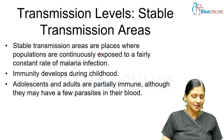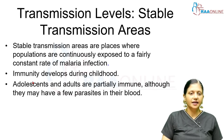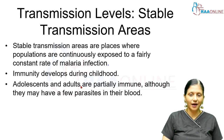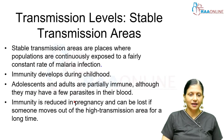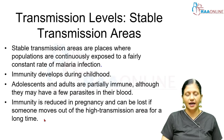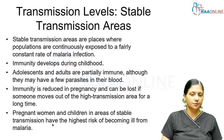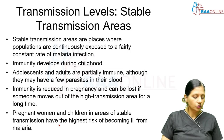There are stable and unstable malaria transmission areas. In stable transmission areas like Africa, the population is continuously exposed to a fairly constant rate of malaria, and during childhood a person develops immunity. In these stable transmission areas, adolescents and adults are partially immune and may have a few parasites in their blood. However, when these adults become pregnant, their immunity is reduced, and if they leave the area, immunity can be lost. Pregnant women and children in stable transmission areas have the highest risk.